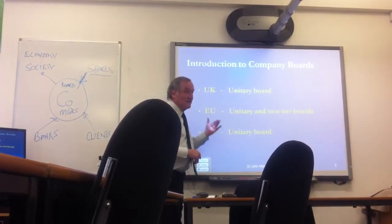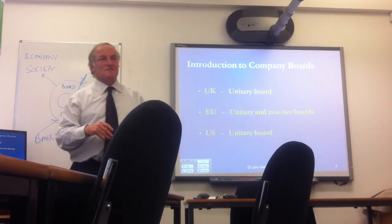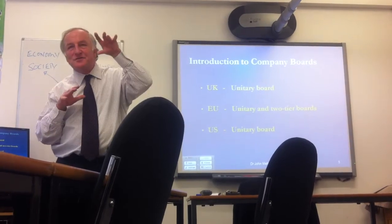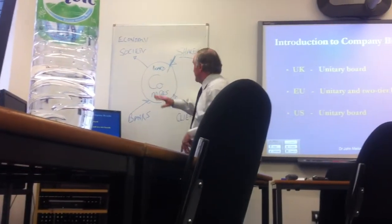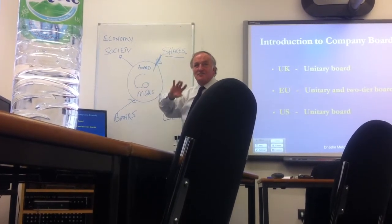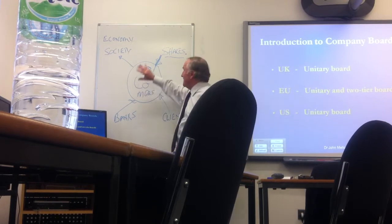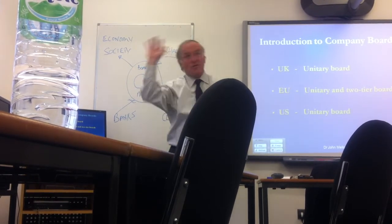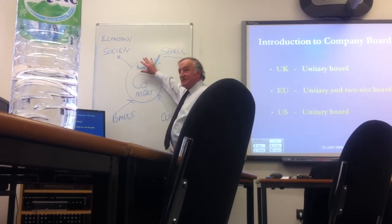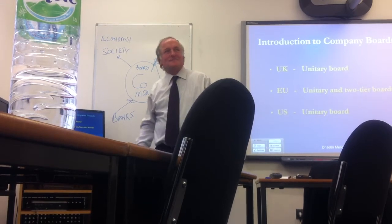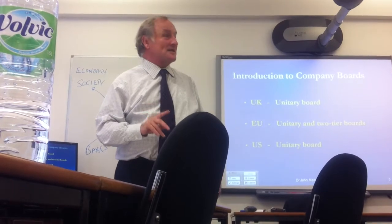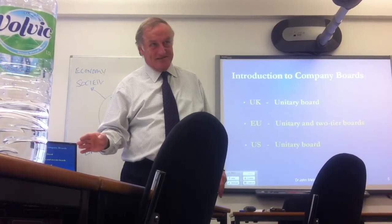In the European Union, however, we have both Unitary Boards and what are called Two-Tier Boards. That's where you get a real separation between what is called the Supervisory Board and the Board of Management. So put another way, in the EU it is a Supervisory Board and a Board of Management. Furthermore, on that Supervisory Board in the European Union, you have representative unions and the employees — you don't have that in the United Kingdom.